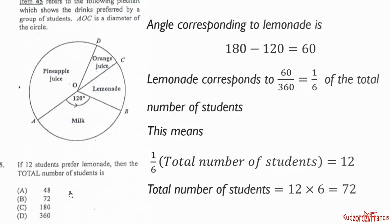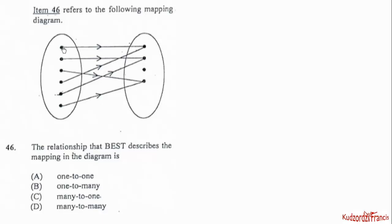Item 46 refers to a mapping diagram. We can see that two or more x-values are mapping onto one y-value — that is, many x-values map to only one y-value. This is a many-to-one relation, so the mapping is many-to-one.